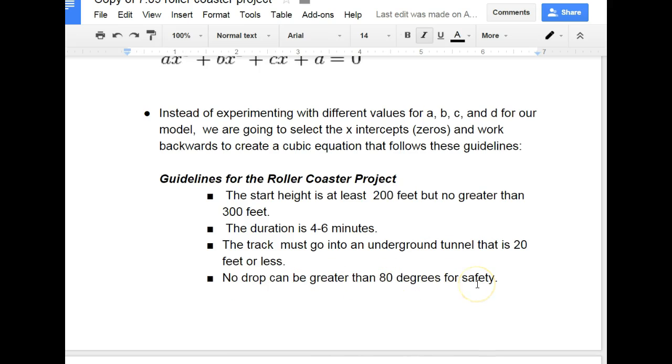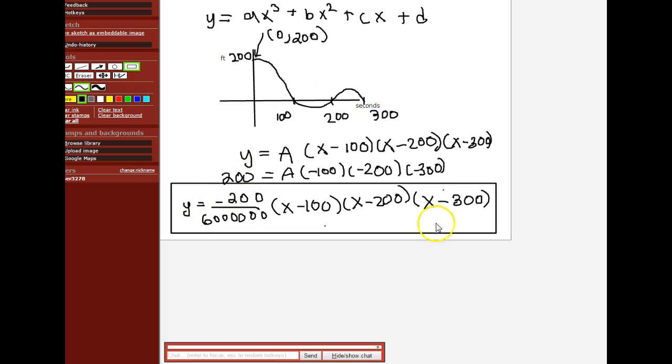We're going to be using our equation right here. I rewrote it so that it was all on one line, it's still messy but I'm doing the best with my handwriting. Y is equal to negative 200 divided by 6 million, parentheses x minus 100, x minus 200, x minus 300. These 100, 200, 300 are the roots of the equation and it's the times that it crosses the x-axis in seconds. It's going to start at 200, that's what that 200 is for.